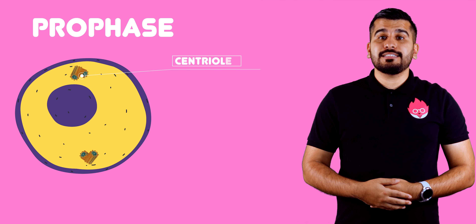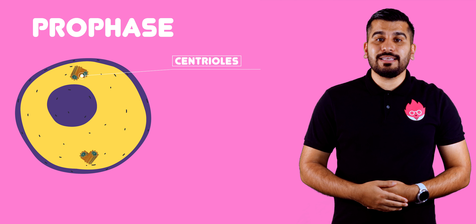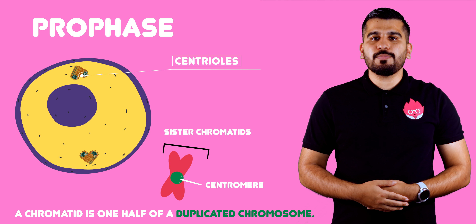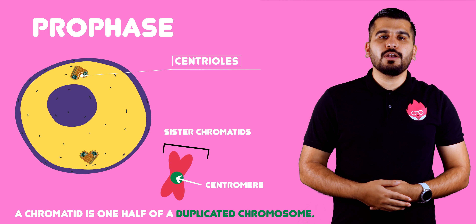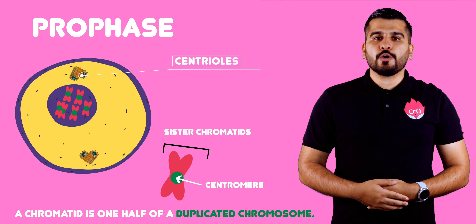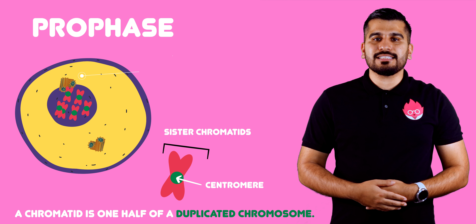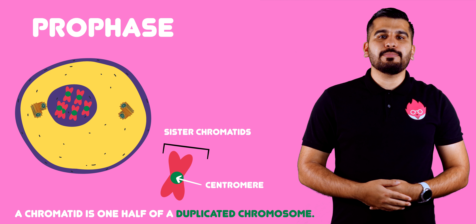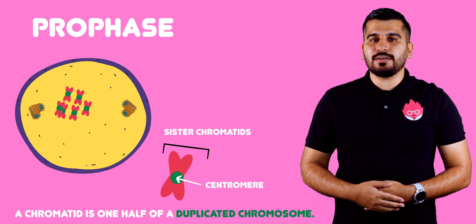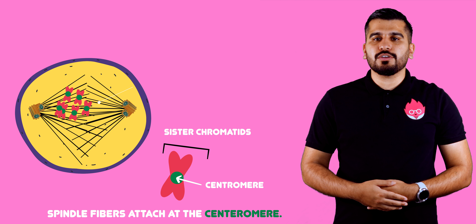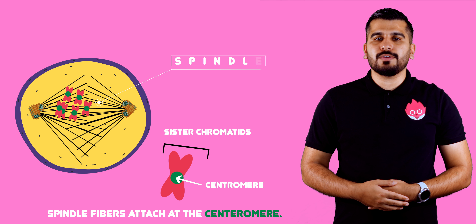In prophase, DNA would have replicated in interphase. The chromosomes pair up in homologous pairs called chromatids. Chromosomes condense, becoming visible, and the nuclear membrane breaks down. They attach to protein structures called spindle fibers.